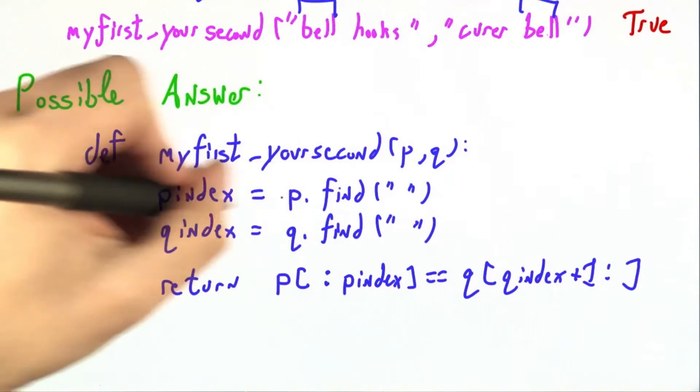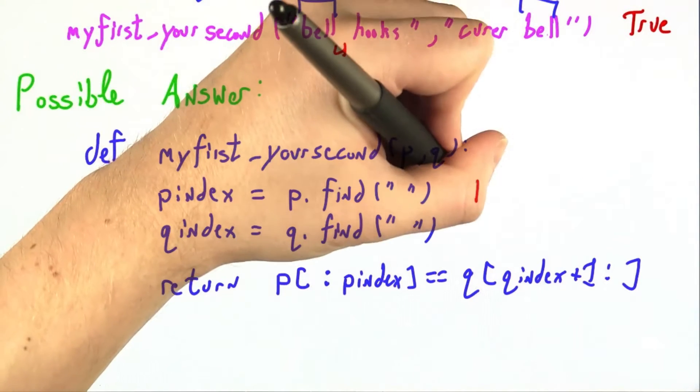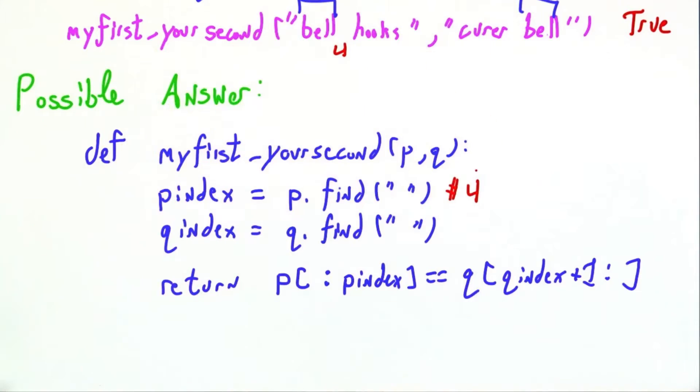And the first thing we're going to do is find the index into p of the first space. p.find space: 0, 1, 2, 3, 4. This will be 4 in our running example.